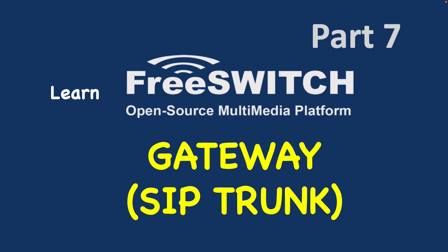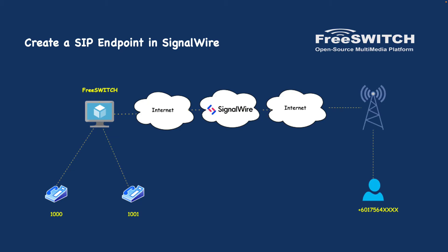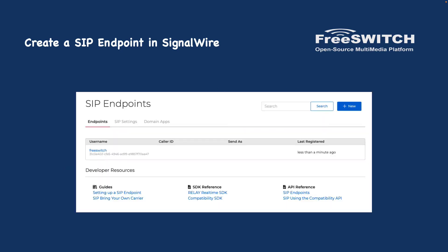Welcome to another FreeSWITCH training on SIP trunks, which we call gateways in FreeSWITCH. Today we will learn why we need SIP trunks and how to add one to your FreeSWITCH installation. In the previous video, part six, we registered two phones and they could call each other. Now I want to call my mobile number and publish a number for customers so they can call my phones at 1000 or 1001 — that is where we need a SIP trunk.